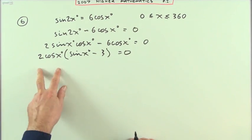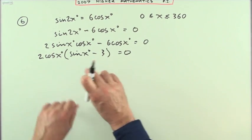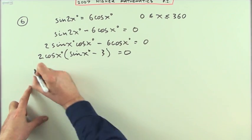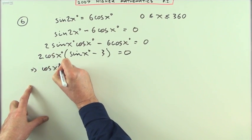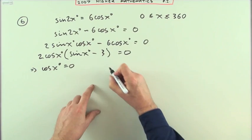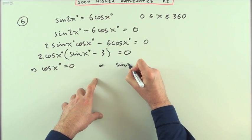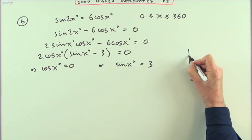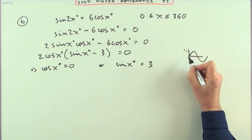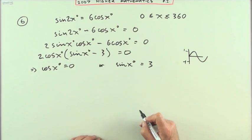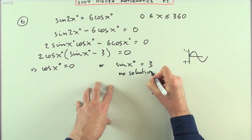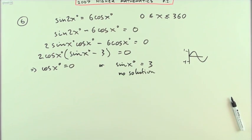Then solve the two parts. If two parts multiply to give zero, then either one could be zero. If this part were zero, cos(x) is zero. If this part is zero, sin(x) would have to be three. That's actually quite handy because sin can only go up and down as high as one or negative one, so there's no solution to that part. That saves me any further working.